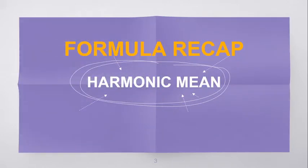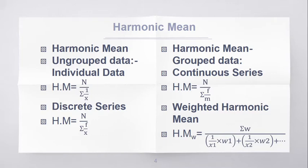Here to give you a recap of the formulas with regard to harmonic mean. So when it comes to harmonic mean, for individual data, it is given by the formula n by sigma 1 by x.